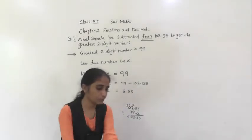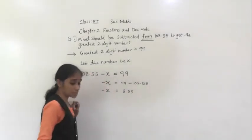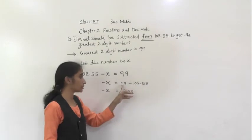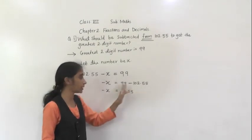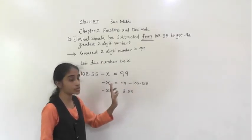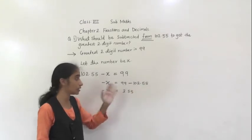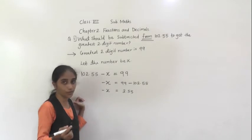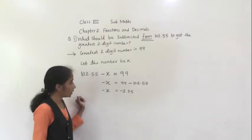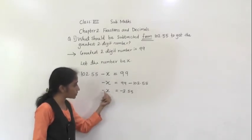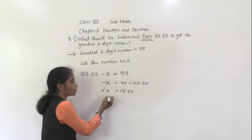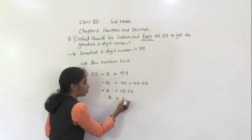Now 3.55 we got. Now check the sign — which is the greater number? 102.55 is greater than 99. For the answer we have to give the sign of the greater number. Both sides have negative sign, so cancel both negative signs. So X is equal to 3.55.